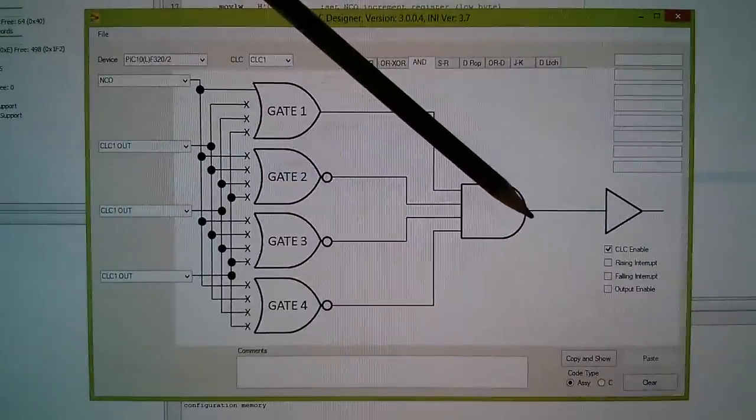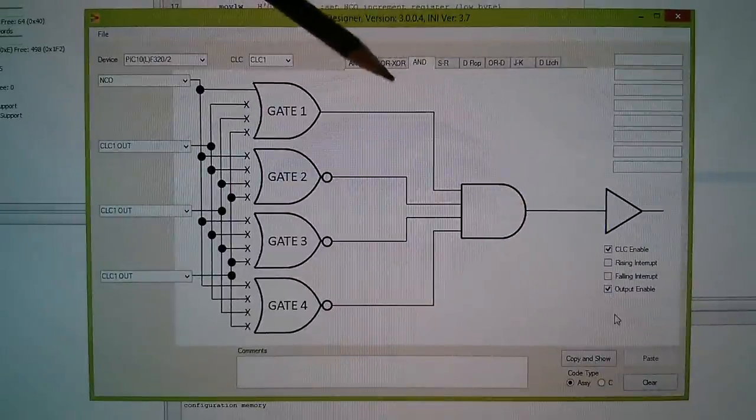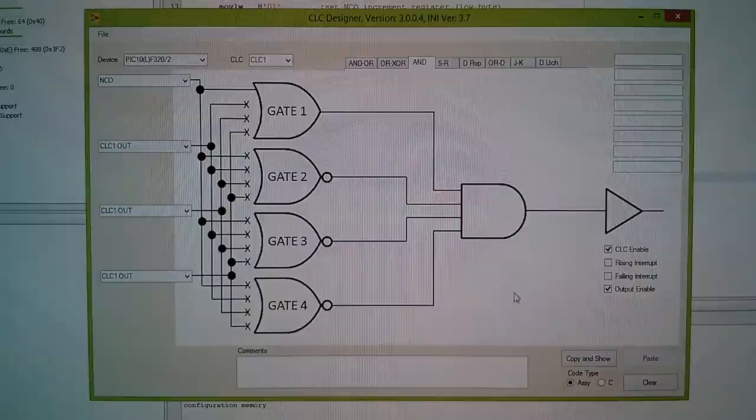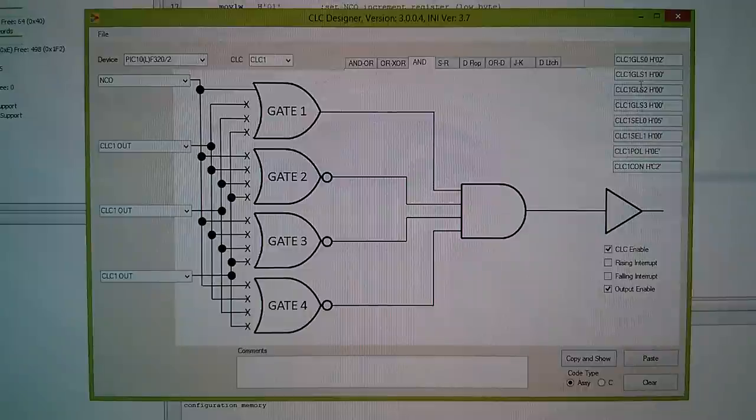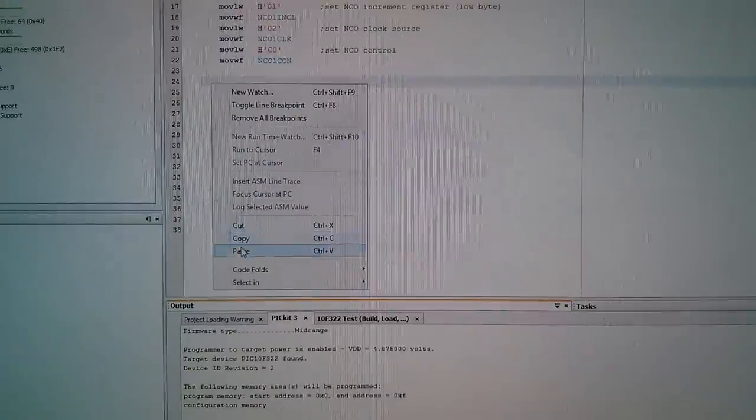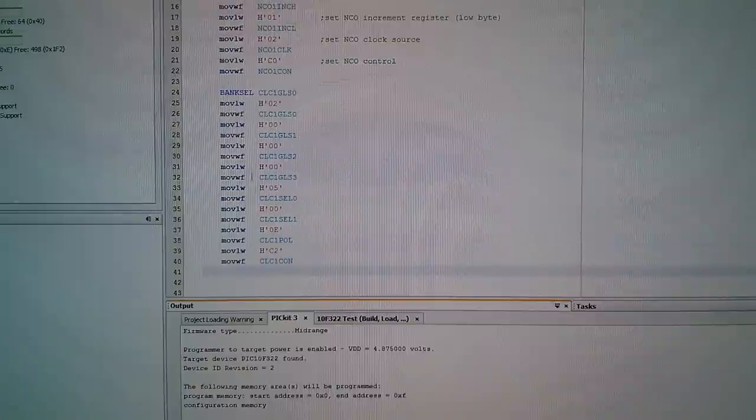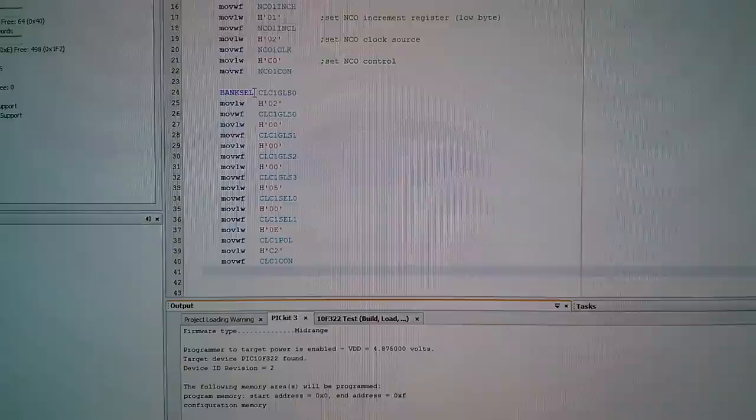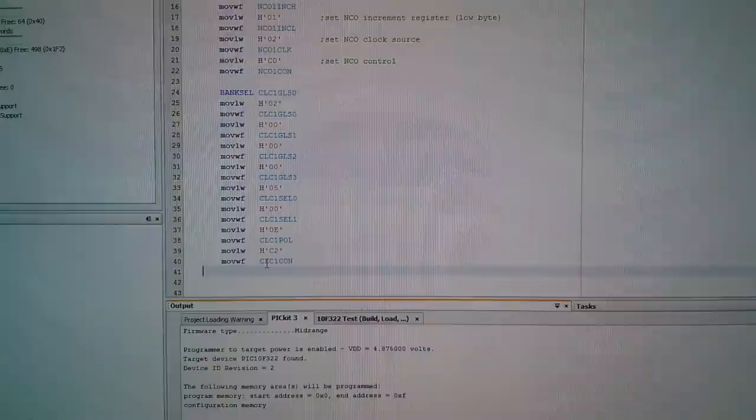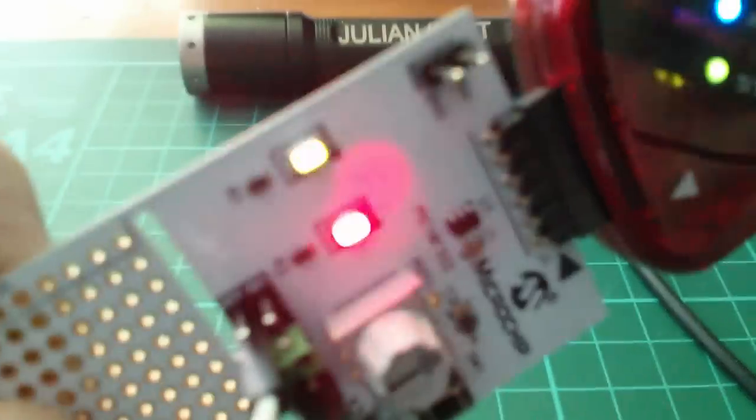So the last thing down the bottom there is to enable the output of the logic cell. And then I need to select assembly language, because that's what I'm working in. Copy and show. And the instructions that I need to add into my code are simply written up here. So let's paste those bits of code in. There they are. So it's written these. Well, there are 17, in fact, with the bank cell. We don't need the bank cell for this chip, because it only has one bank. But all the code elements are in.